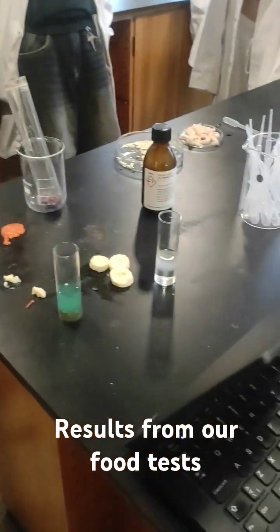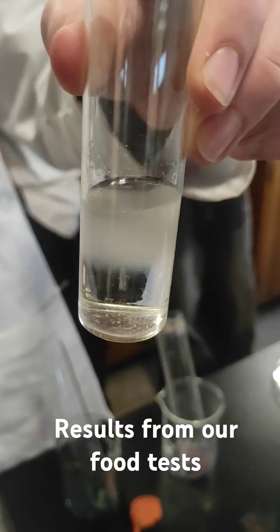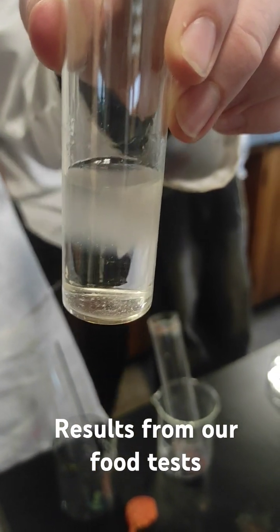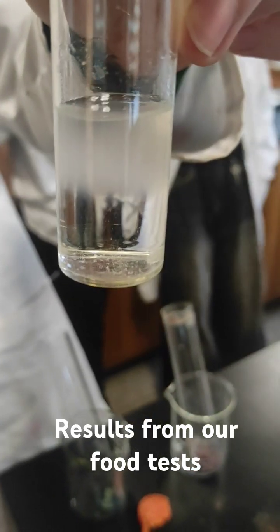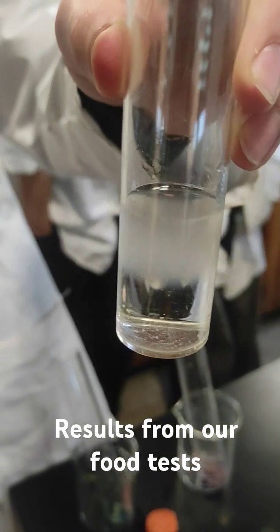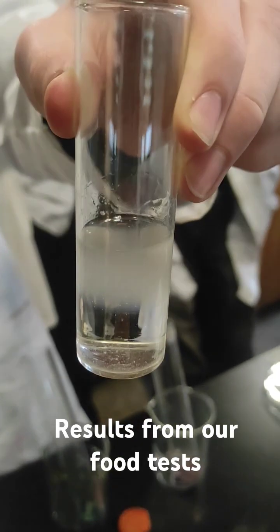Then we have our fat test. In our fat test here, we can see the white layer on top. The white layer is fat mixed with alcohol, where the clear below is pure water. This here was done with salami, so we can see there's a high fat content in our salami.